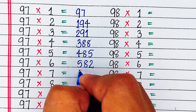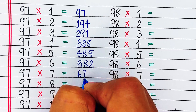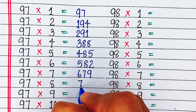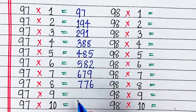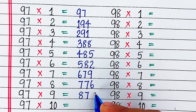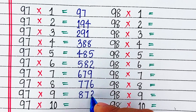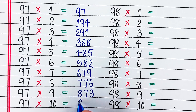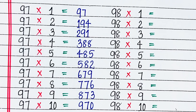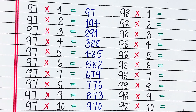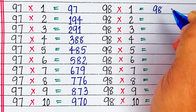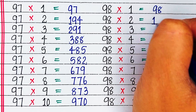97 sixes are 582. 97 sevens are 679. 97 eights are 776. 97 nines are 873. 97 tens are 970.